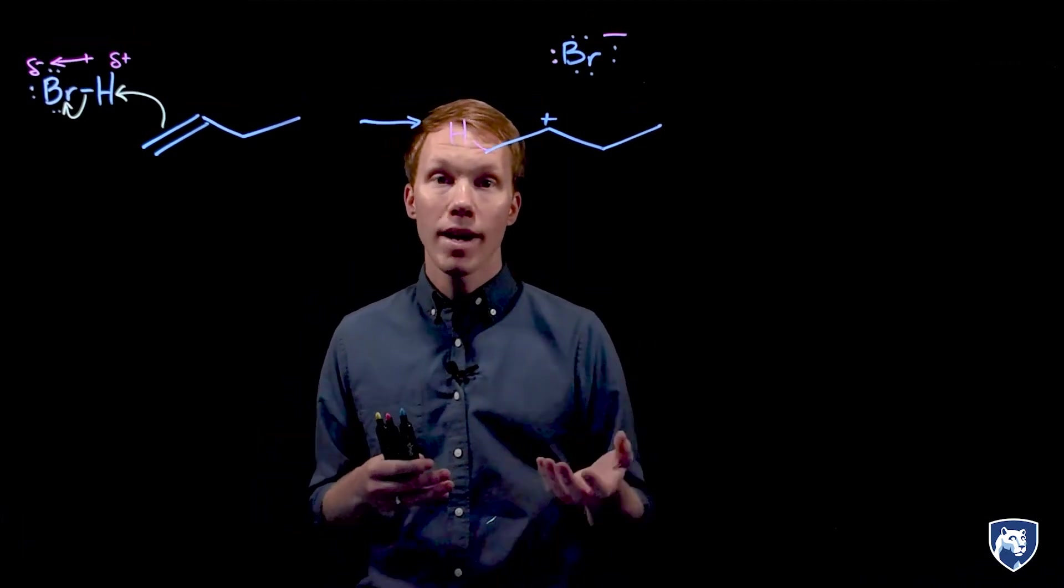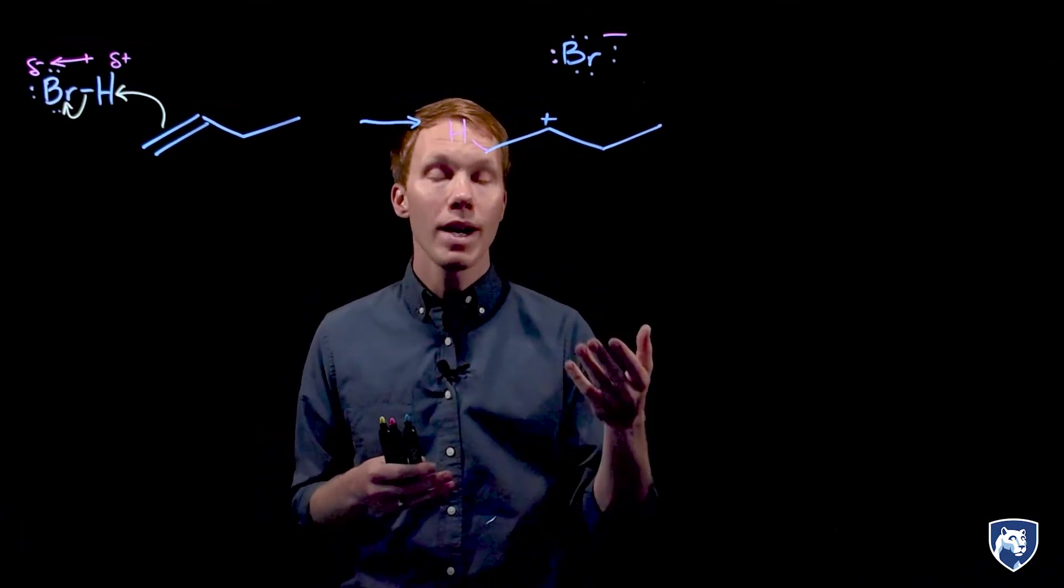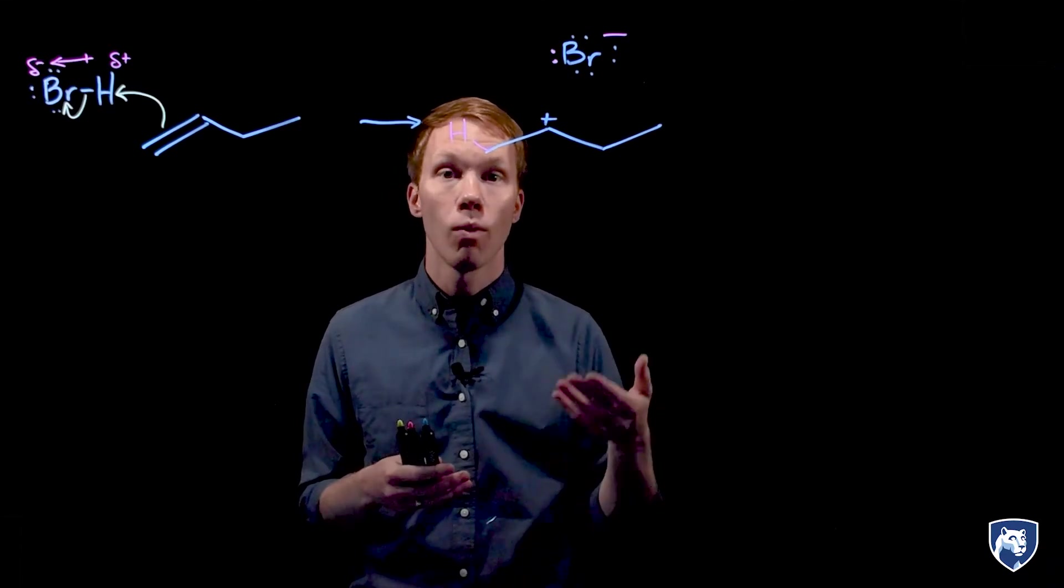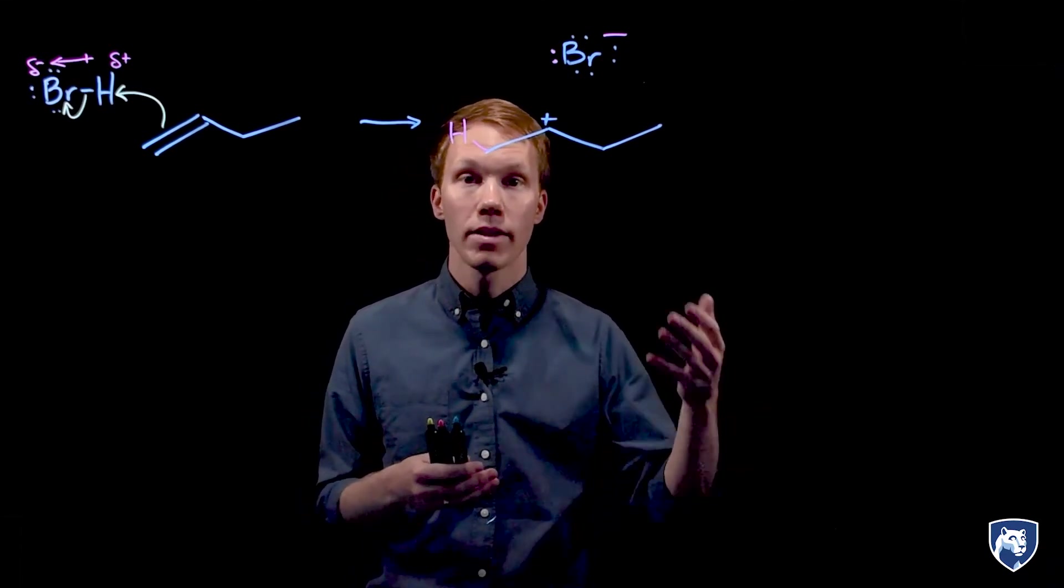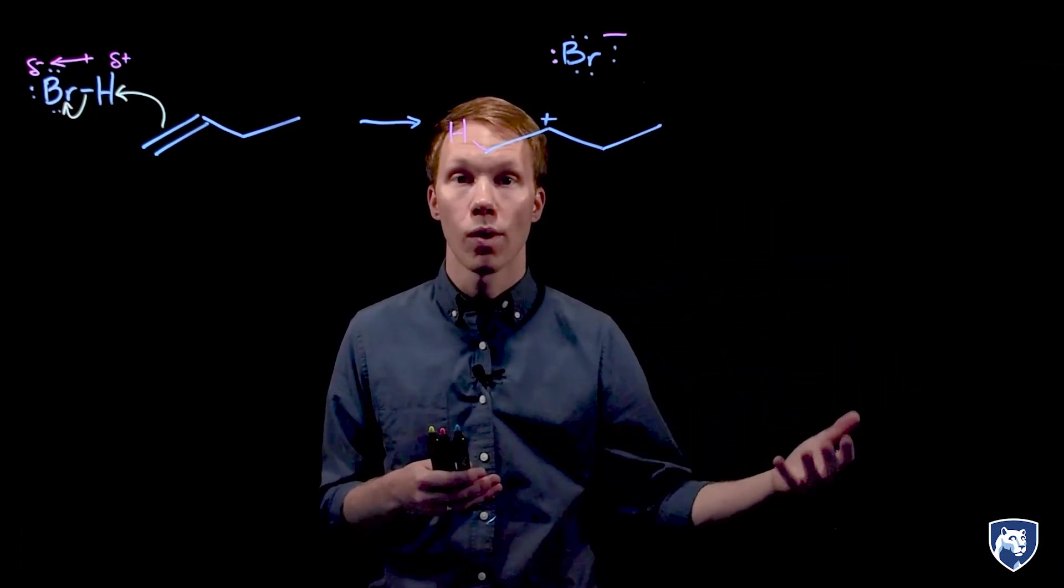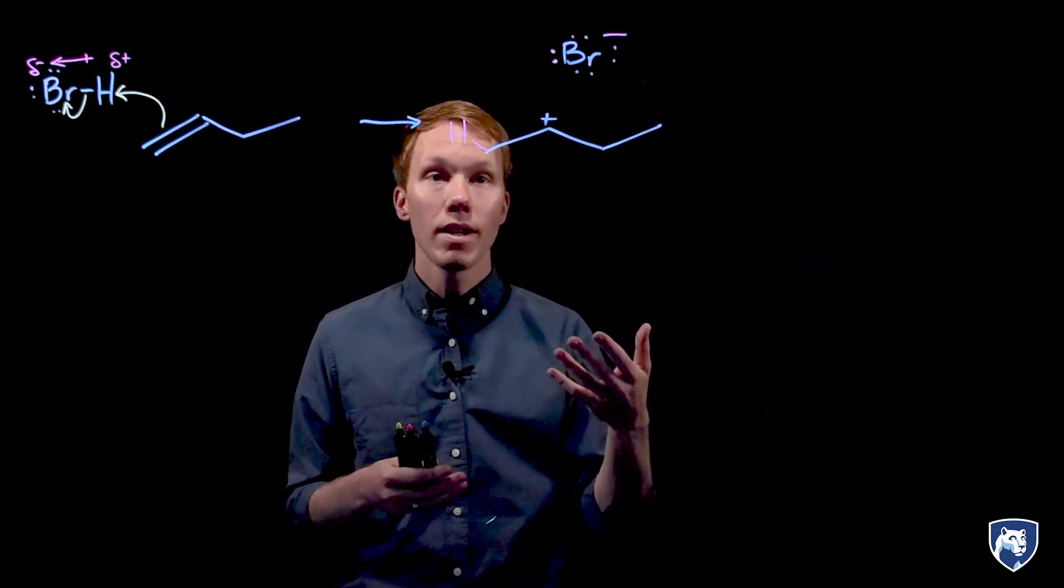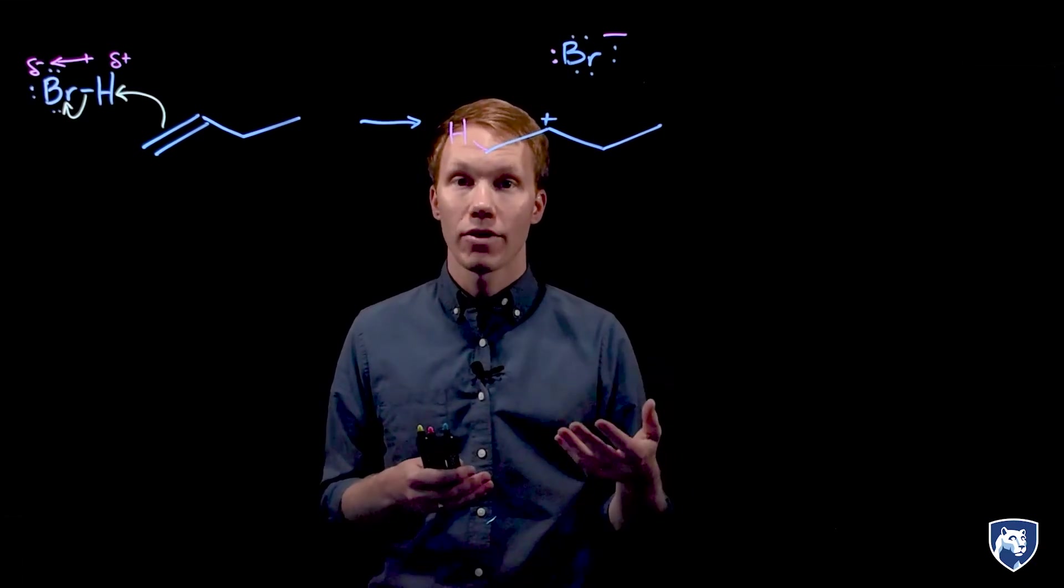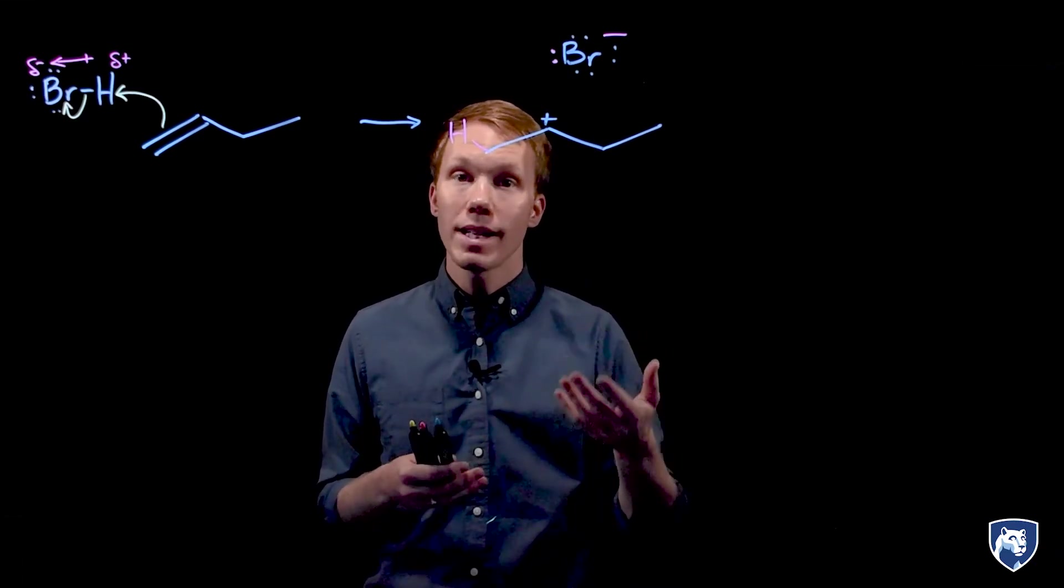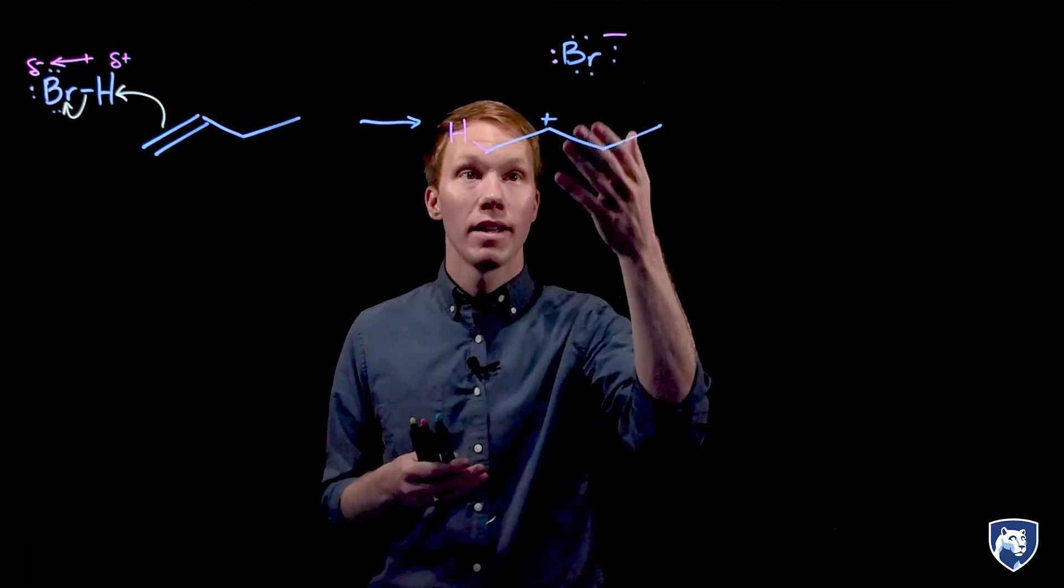Now that we have drawn the products of this mechanistic step, we want to ask ourselves the same question again. What is the nucleophile and what is the electrophile? Can anything else happen to get us to a neutral organic product? Given the number of charges here, the answer is yes. We can identify an electrophile and a nucleophile. Can you identify what is the nucleophile in this pair?